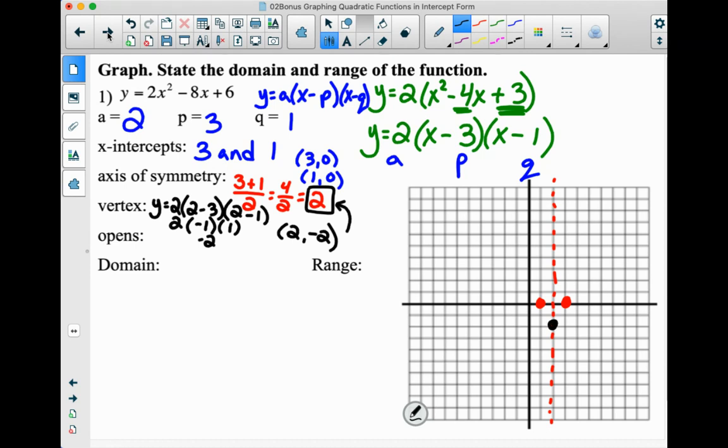We have enough to graph our parabola right there. We know it opens upward because a is positive. If that was negative, it would open downward.